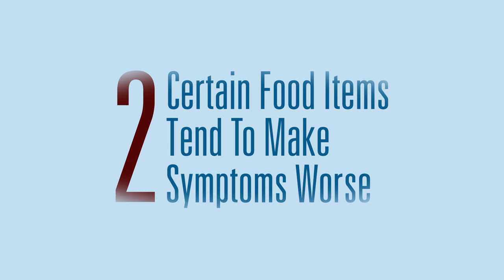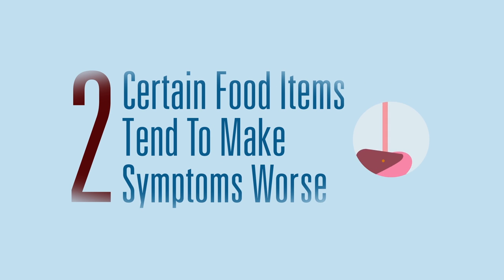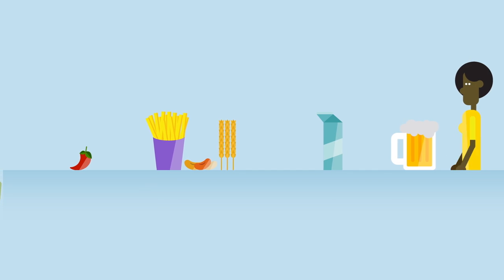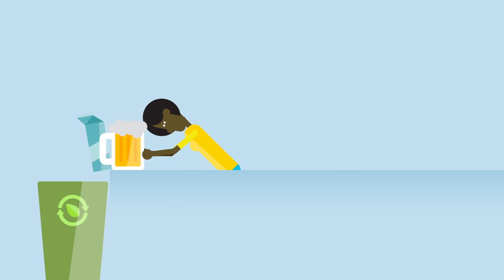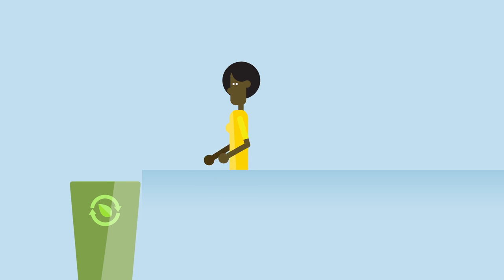Specific food groups can wreak havoc on your digestive system, so it's important to avoid them especially during a Crohn's flare-up. Bulky grains, high-fiber foods, hot spices, fried or greasy foods, alcohol, and dairy products may increase stomach pain and diarrhea in someone with Crohn's disease.